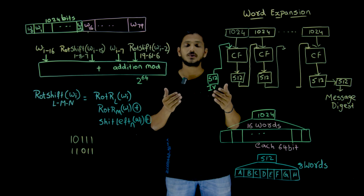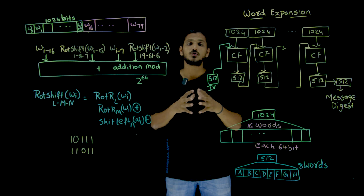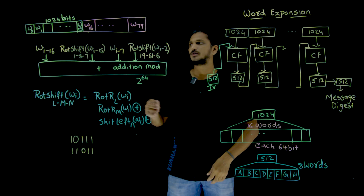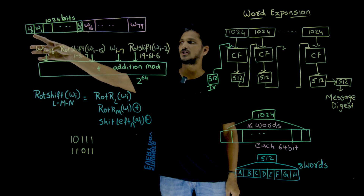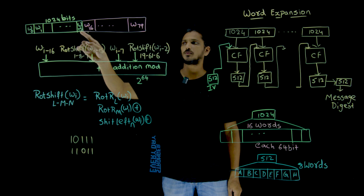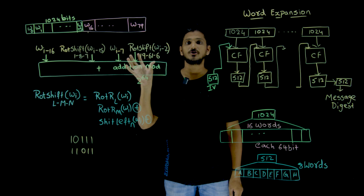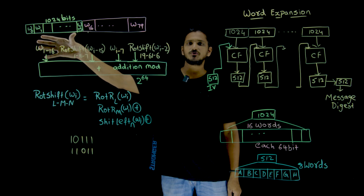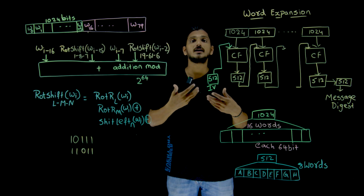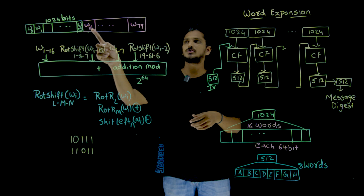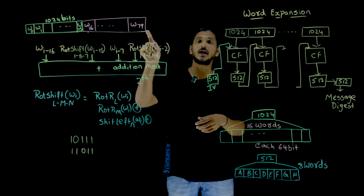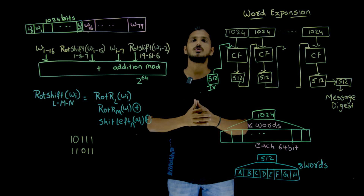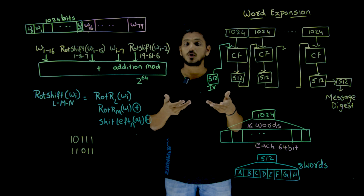How 1024 bits are converted into 80 words — that is what we are going to understand in this class with an example. The 1024 bits are first converted into w0, w1, up to w15 — that is 16 words. Using these 16 words, the remaining words w16, w17, up to w79 are generated.